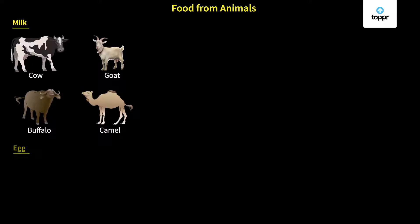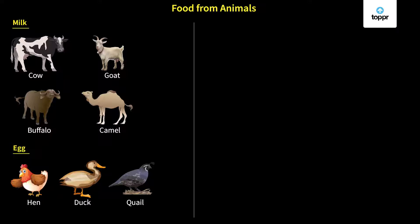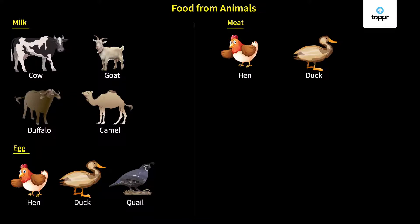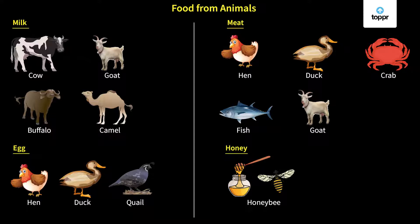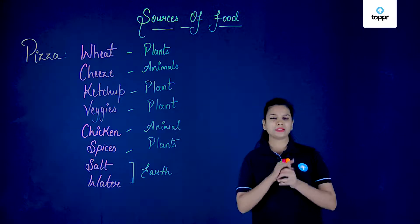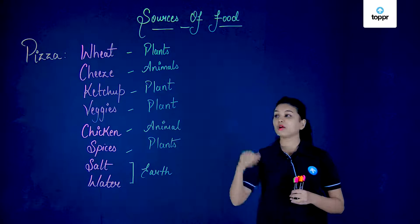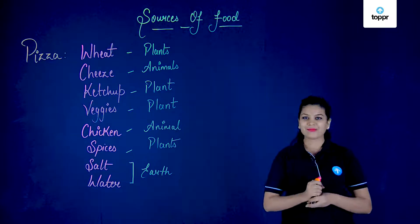The next product is eggs — an important food item obtained from hen, duck, and quail. Next is meat, which can be obtained from hen, duck, fish, goat, and crabs. Lastly, there is honey, which is obtained from honey bees. Honey bees collect nectar from flowers, take it to their hive, and convert it into the yummy honey that we eat. So these are the foods we get from animals, and we should thank both plants and animals for giving us this wonderful food.